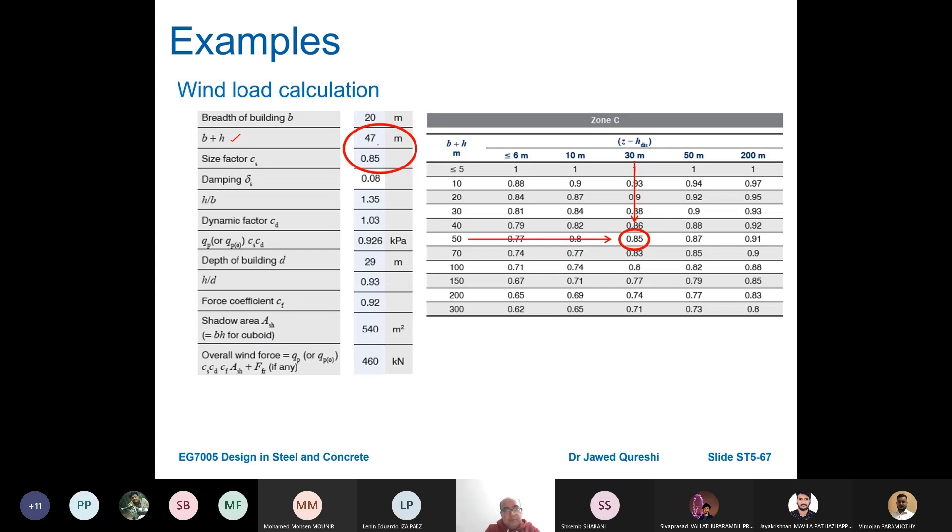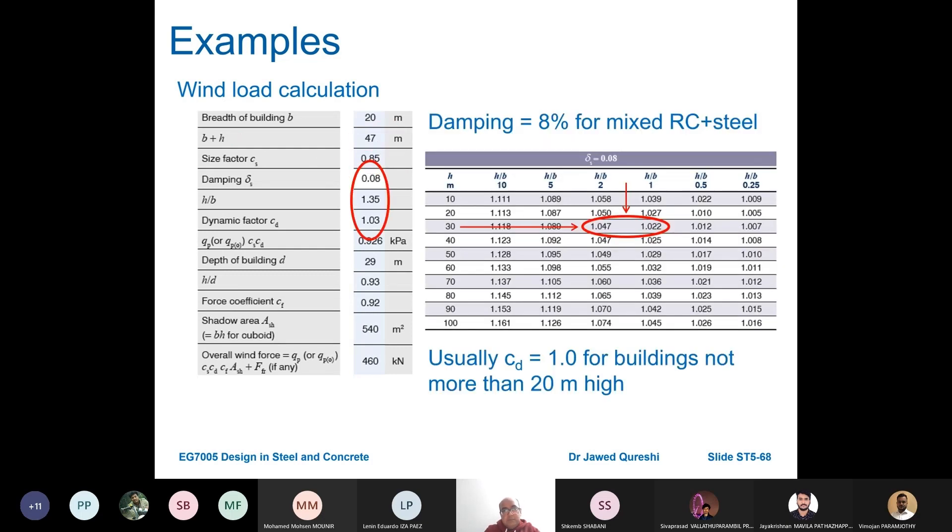Orography: most buildings have non-significant orography so don't worry about it. Breadth plus height we sum up, it's 47. H minus distance was 27. So b plus h is about 50 and h minus distance 27, so it falls into this category. The value comes out to be 0.85. Size factor c_s is 0.85. Damping is 8% for mixed RC plus steel. H over b is 1.35, which means height 27 is about 30. By interpolation you work out value as 1.03. C_d is usually 1 for buildings not more than 20 meter high.